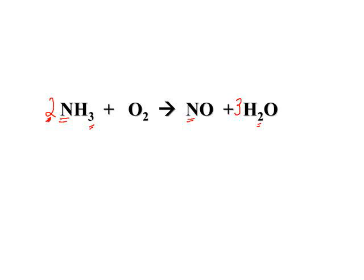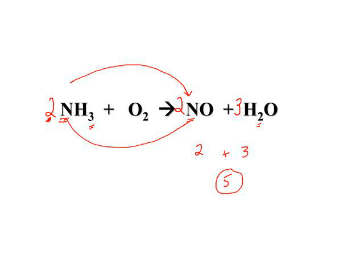In doing that we messed up our nitrogen, so anytime you have to make a change, quickly fix that before you get too far. At this point we've got two nitrogens and two nitrogens, six hydrogens on each side. Now we look at our oxygens. We've got two oxygens here plus three, giving us a total of five oxygens on one side and only two oxygens over here in the diatomic oxygen.